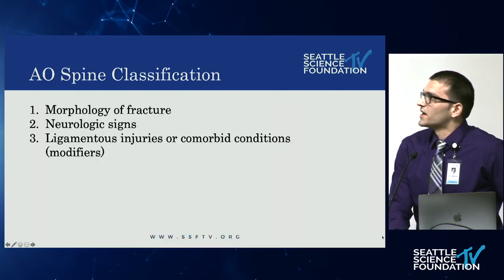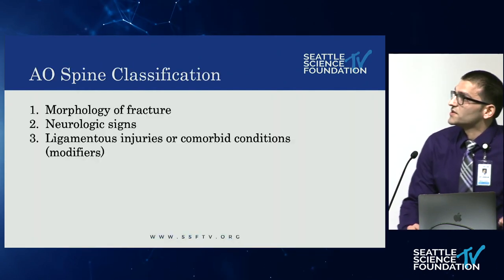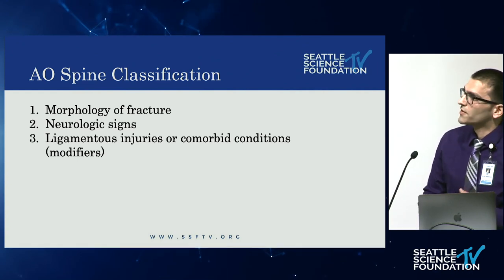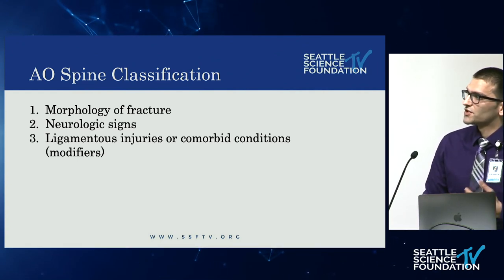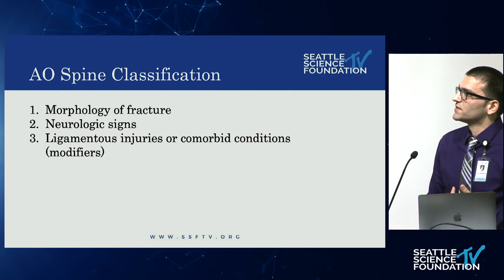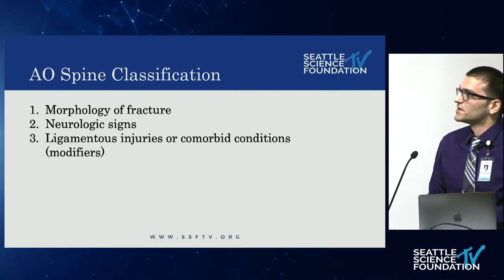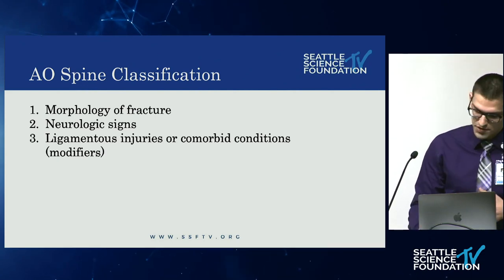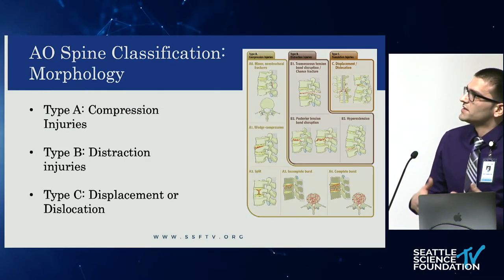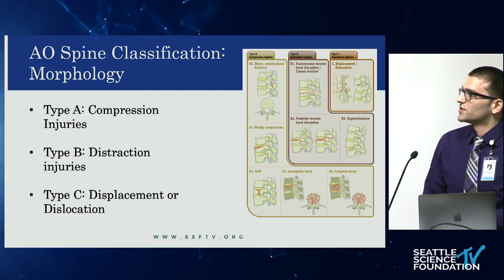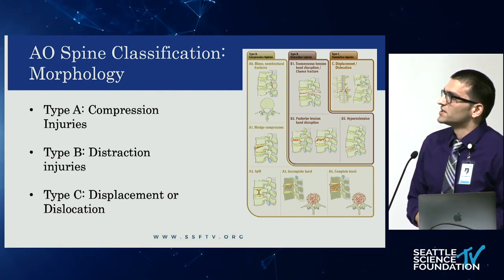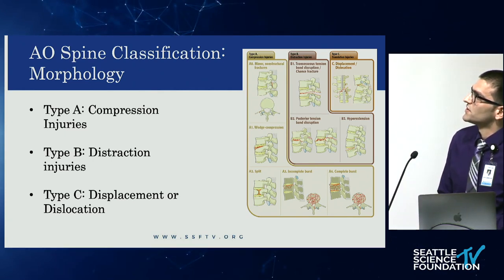Now I want to go over the AO Spine classification system. There are three components: the morphology of the fracture, whether the patient has any neurologic signs, and whether there are any ligamentous injuries or comorbid conditions. There are three fracture types: Type A — compression injuries; Type B — distraction injuries; and Type C — displacement or dislocation injuries, each with their own subtypes.